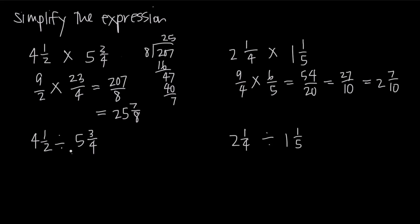Now, what happens when we want to divide mixed numbers? Here we have 4 and a half divided by 5 and 3 fourths. We start the same way by changing both mixed numbers to improper fractions. This is the same problem as before, so the improper fractions are 9 halves divided by 23 fourths. When dividing fractions, we can change this division to multiplication by taking the reciprocal of the second fraction.